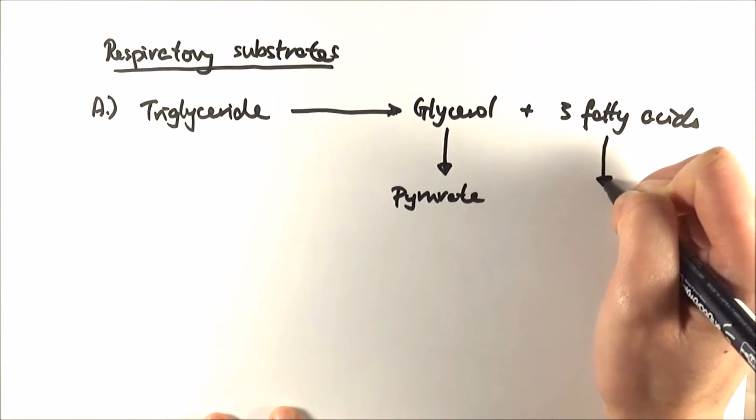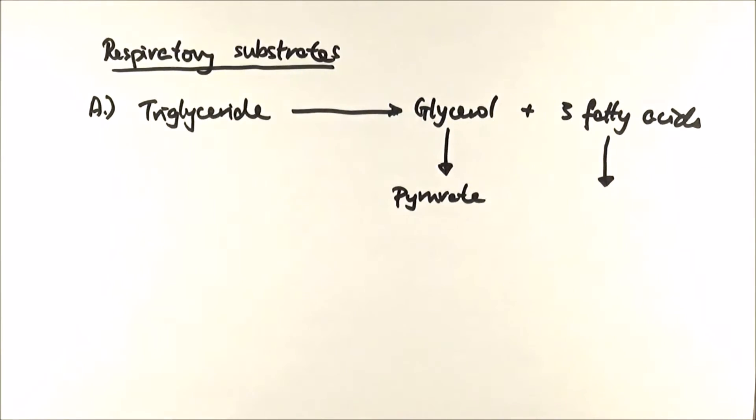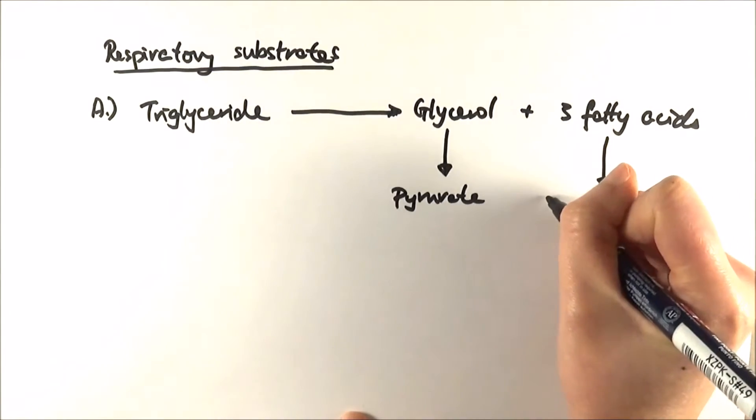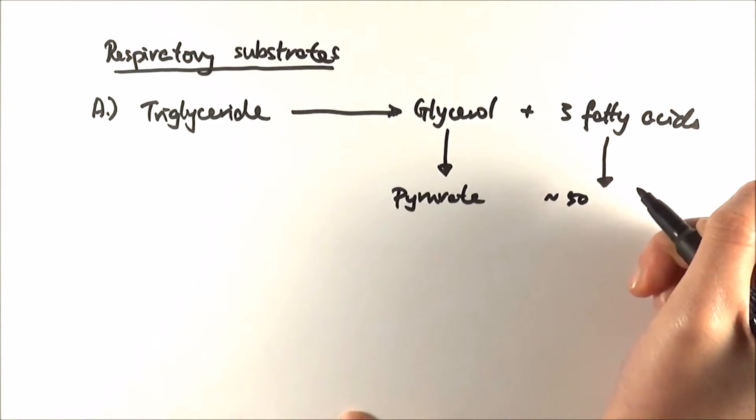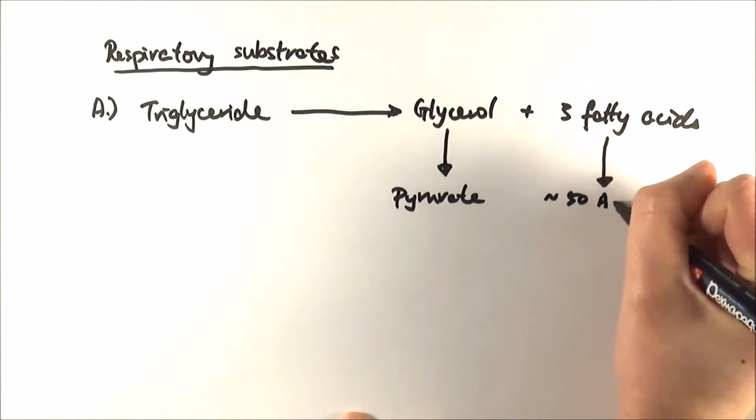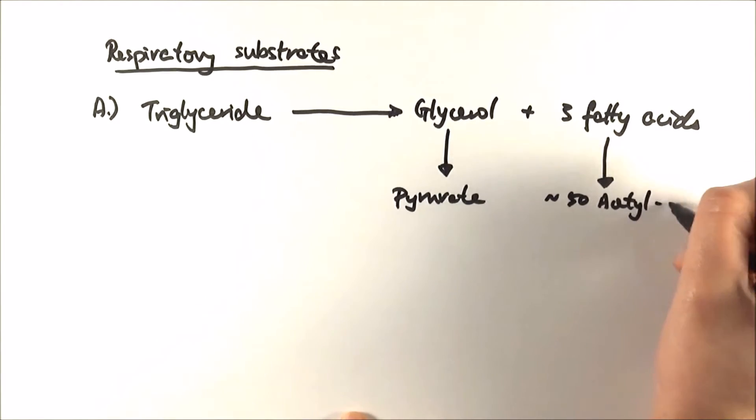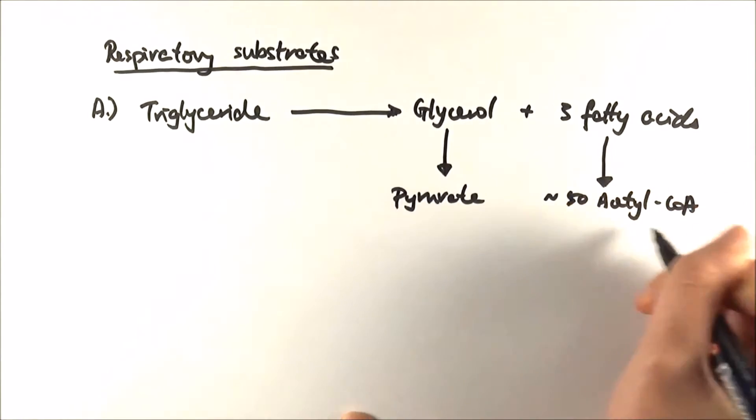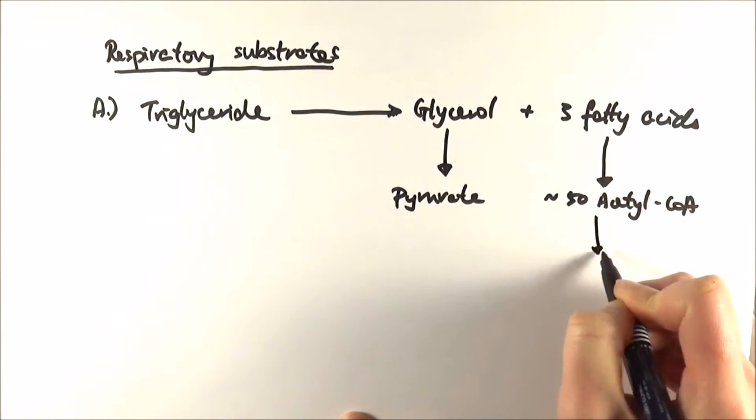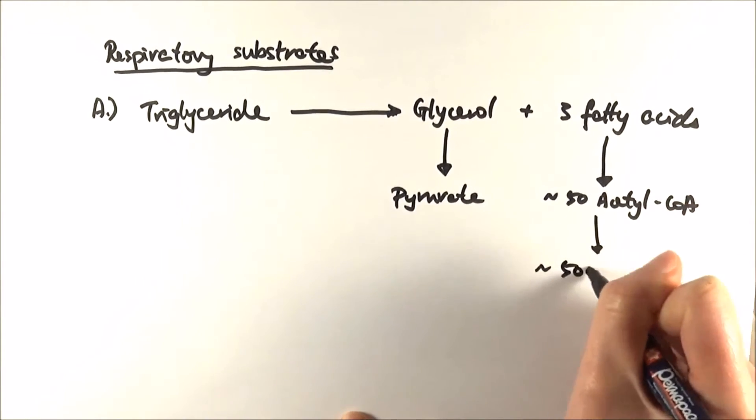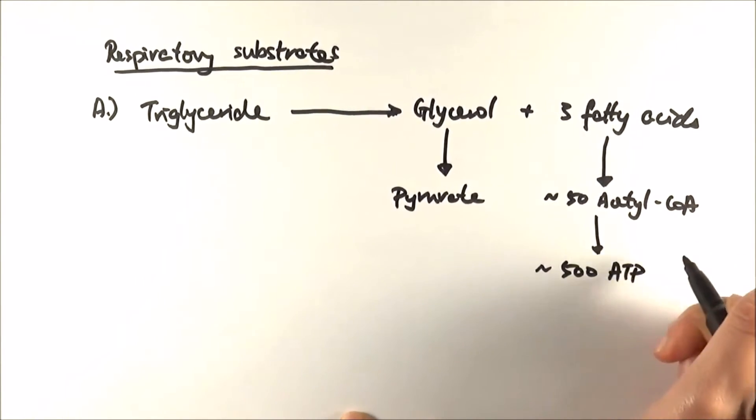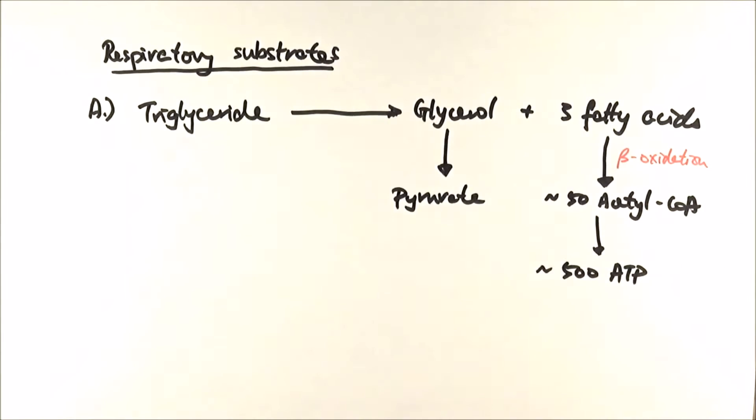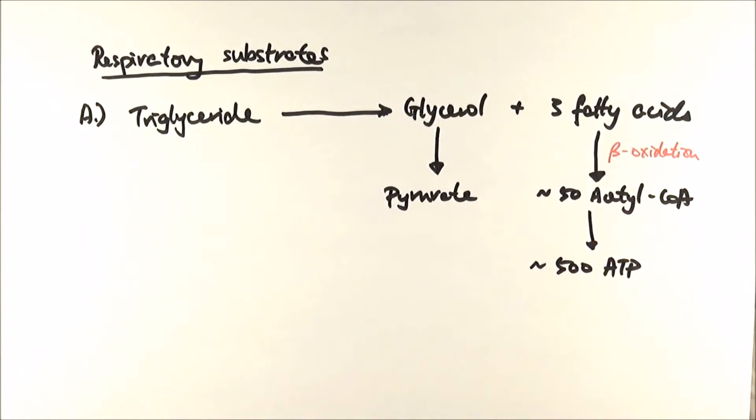The three fatty acids here actually undergo what we call beta-oxidation to make about 50 acetyl groups, or we say it makes about 50 acetyl coenzyme A. From 50 acetyl coenzyme A they can go on to make about 500 ATP molecules. You don't need to actually know how beta-oxidation occurs, but just be aware of this name and this reaction and what it makes.